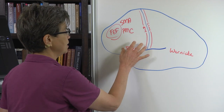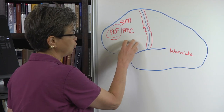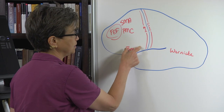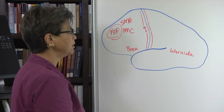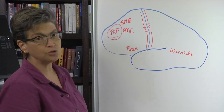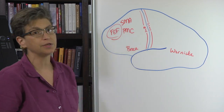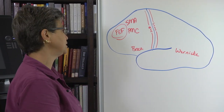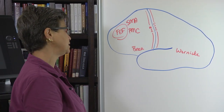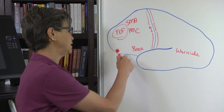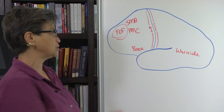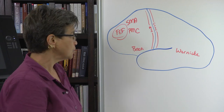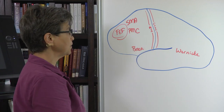Another important motor piece is what's called Broca's area. The use of the term Broca's area is probably out of fashion now, but it's an easier name than describing this anatomically, so we'll go with Broca's area.